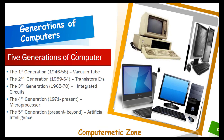Based on these phenomena, computer scientists have divided the history of computers into five generations. First generation: 1946 to 1958, known as the vacuum tube era. Second generation: 1959 to 1964, the transistors era. Third generation: 1965 to 1970, integrated circuits or ICs. Fourth generation: 1971 till present, microprocessors. And fifth generation: present or future, artificial intelligence.